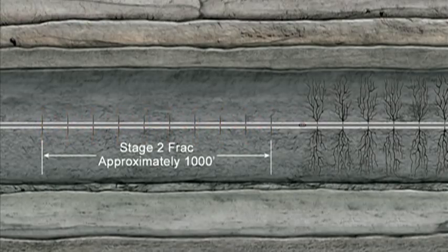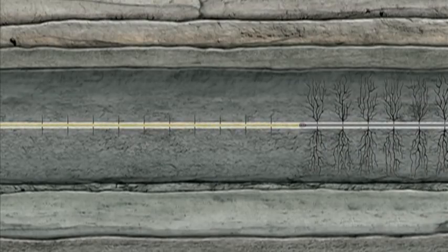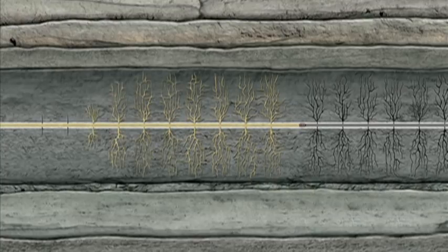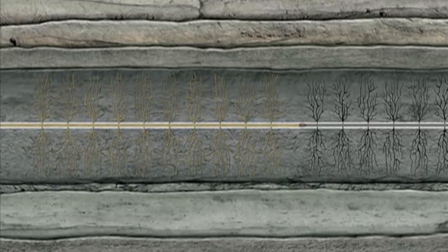Next, a temporary plug is placed to close off the perforated section of the well bore. The process of perforating and fracking can be repeated several times along the horizontal section.